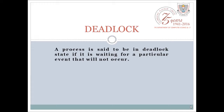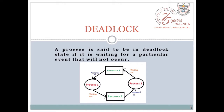We can say a process is said to be in a deadlock state if it is waiting for a particular event that will not occur. Let us understand it with the help of an example. In the figure, process 1 is having resource 1 with itself और वो wait कर रही है resource 2 के लिए जो assigned है process 2 को। Similarly, process 2 के पास resource 2 है और वो wait कर रही है resource 1 के लिए जो assigned है process 1 को। यह situation है जिससे बाहर आना बहुत मुश्किल है। I hope you are clear with the definition of deadlock.